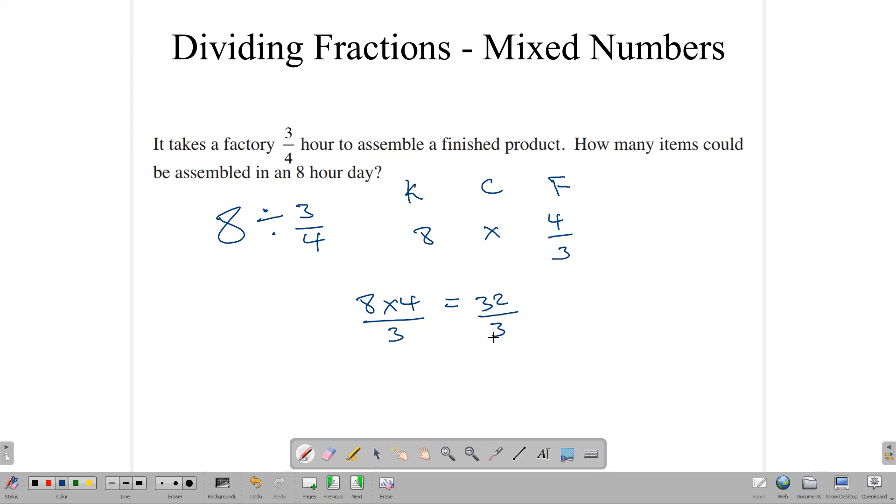Now, let's divide 32 by 3. How many 3s can we get out of 32? Gives us 10 3s. 10 3s are 30, and 2 remainder. So, we can assemble this and this number of products. But this one won't be totally complete. So, in answering this particular question, our answer would be 10. We can assemble 10 complete products.